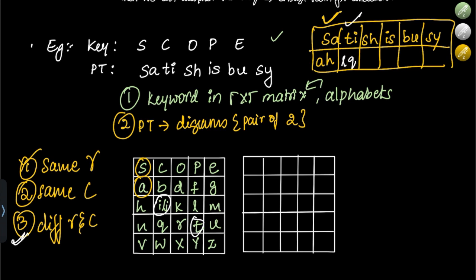For the pair S and H: S is here, H is here — they are in the same row. For S, the letter to the right is A, and for H it is U. So SH encrypts to AU.